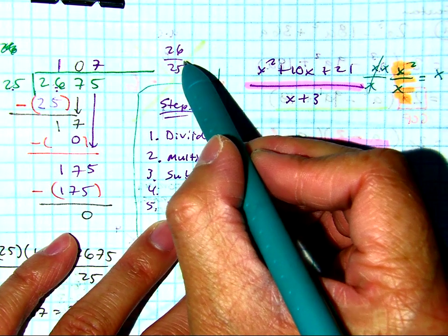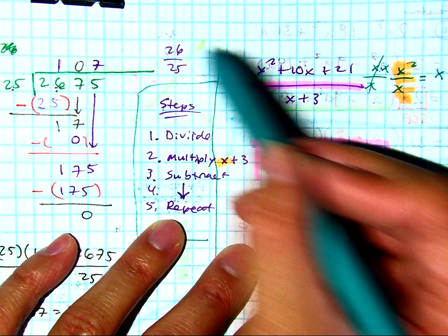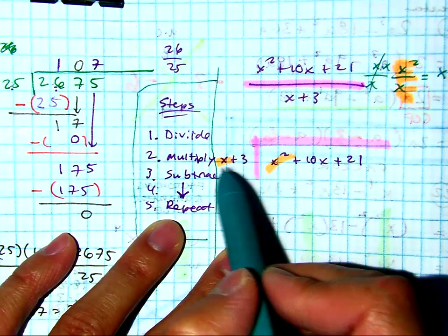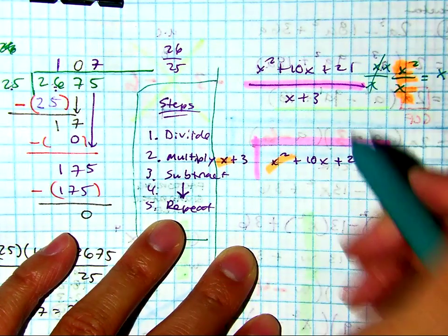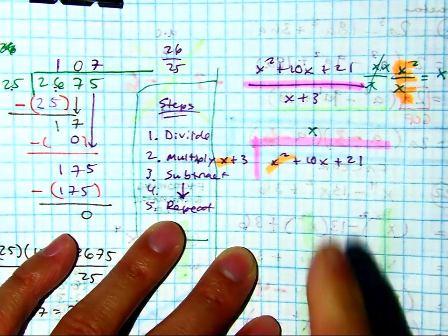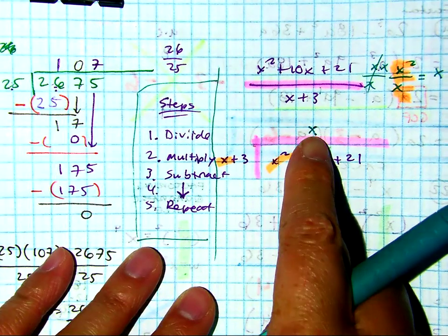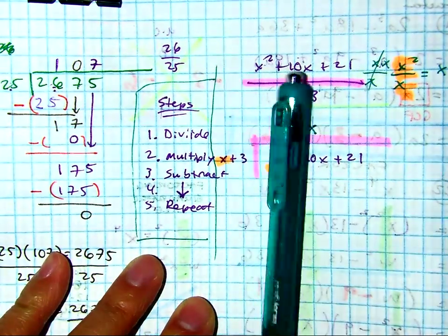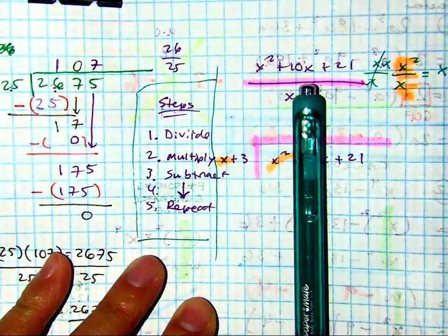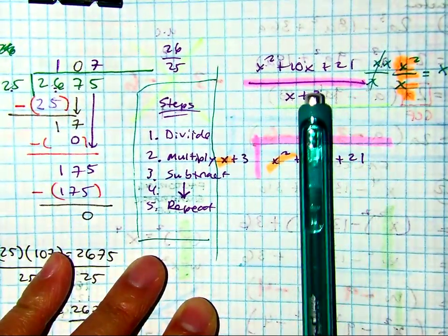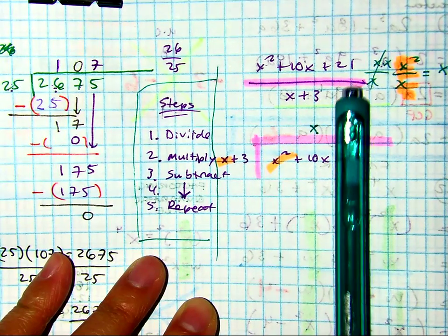26 over 25. That was the example we just did. Okay? So x goes into x squared x times. So I'm going to write the x right here. Now I chose to write the x here and not here. As you'll recognize, they fall into columns. Did you see that with my pen? All of these will be x's, all of these will be x squareds, and all of these will be constants.